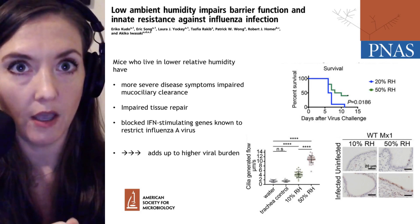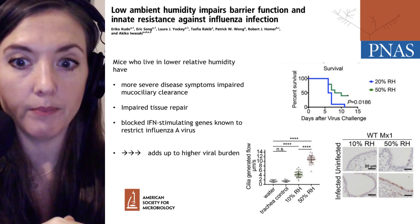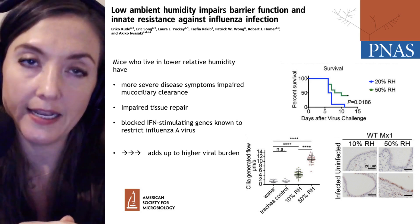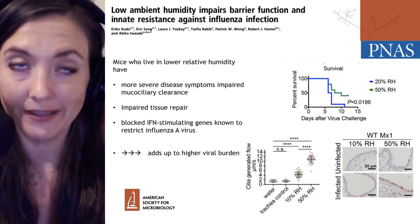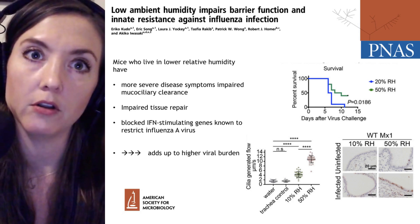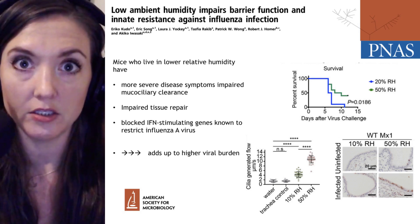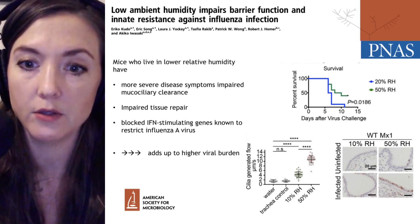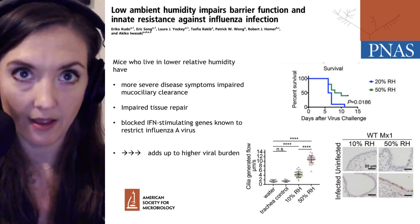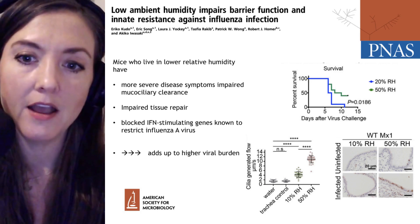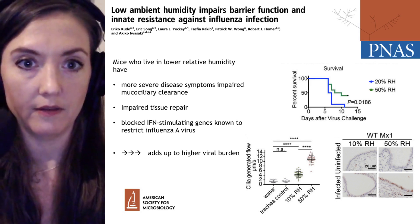They looked at several measures of innate immunity. One of those, shown in the lower left-hand side, is the ability of ciliated epithelial cells to clear mucus — so that if an influenza virus particle lands on one of those ciliated epithelial cells, it will be cleared before it has the chance to infect any nearby cells. At 10% relative humidity there is lower flow clearance from these epithelial cells, whereas at 50% relative humidity those cells have a higher flow rate and the cilia are more active.